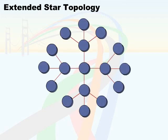An extended star topology is sometimes a better solution for organizations that require less of a single point of failure. This is going to be much more resilient than a star topology because, as you can see, we've got points of failure for different areas of the network, meaning that one point of failure cannot cause the entire network to fail at any given time.